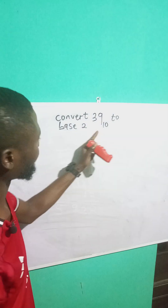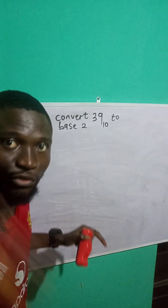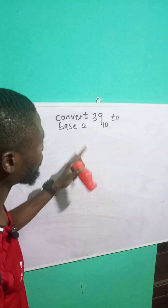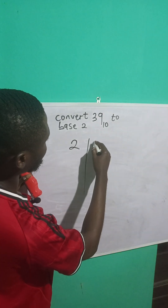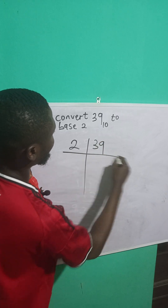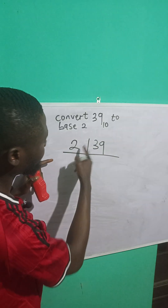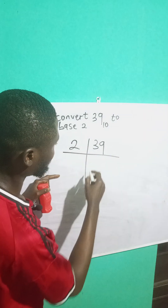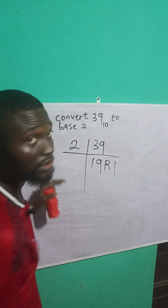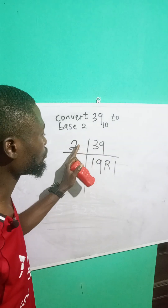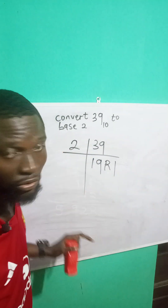I want to convert 39 from base 10 to base 2, so I'm going to divide through by 2 because I'm converting to base 2. 39 divided by 2 is 19 remainder 1 — if 39 oranges are shared by 2 people, they get 19 each with 1 left over.